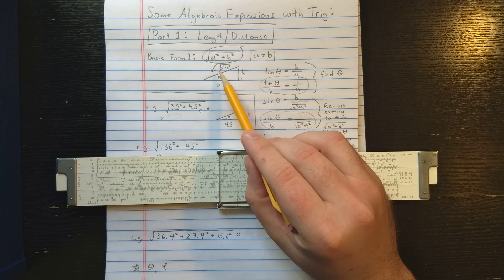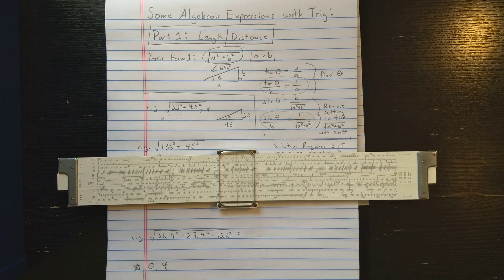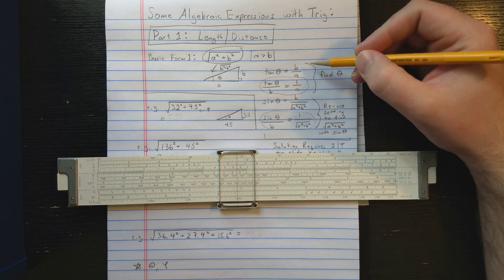So you set up this triangle. If this side is a, this side is b, then the hypotenuse here is the square root of a squared plus b squared. So let's see how the solution would work.